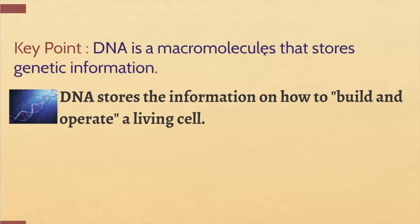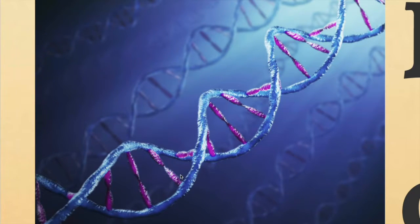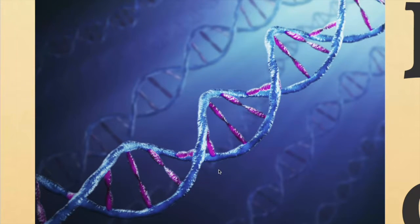You've seen pictures of DNA before — maybe on Jimmy Neutron — this twisted structure. This is just a single molecule of DNA. It's made of many smaller molecules, which is why we call it a macromolecule. It's made of different sugars and acids and things that come together to form this twisted shape.